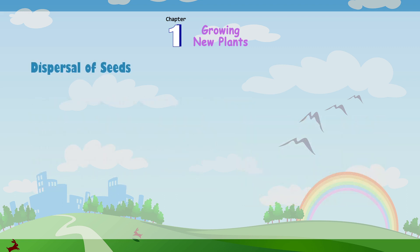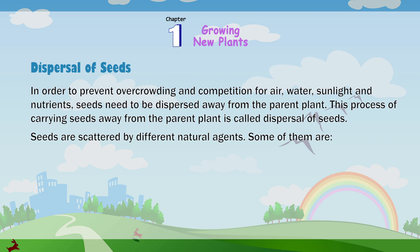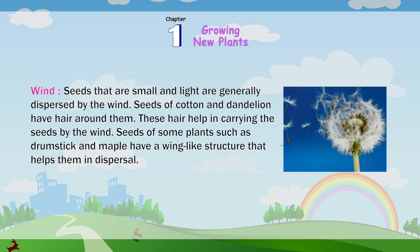Dispersal of seeds. In order to prevent overcrowding and competition for air, water, sunlight, and nutrients, seeds need to be dispersed away from the parent plant. This process of carrying seeds away from the parent plant is called dispersal of seeds. Seeds are scattered by different natural agents. Wind: seeds that are small and light are generally dispersed by the wind. Seeds of cotton and dandelion have hair around them that help carry the seeds by the wind. Seeds of some plants such as drumstick and maple have a wing-like structure that helps them in dispersal.